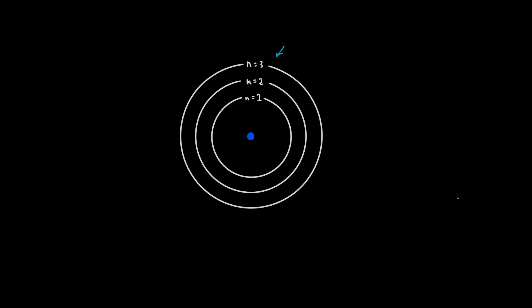Here I have drawn a pretty basic model of the atom, and I've drawn three different shells: the n equals one, n equals two, and n equals three shells. n is our principal quantum number, and it explains the energy level that you are present at within the atom. n ranges from one to infinity, theoretically, and represents our energy level.